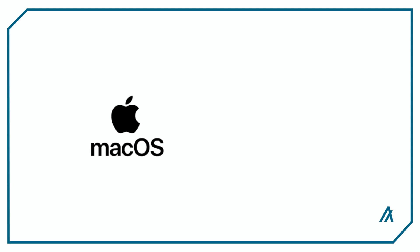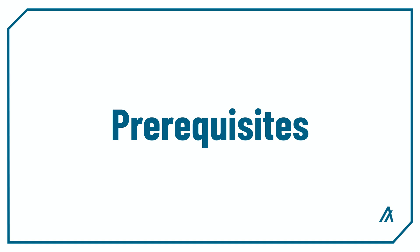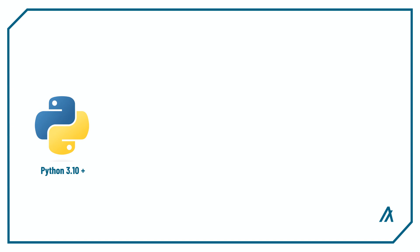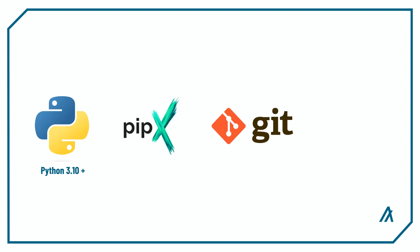A quick note before we get started: I'll be using macOS for this tutorial, but I'll leave a link on how to set up your development environment in Windows, along with all the links mentioned in the description. There are some prerequisites you need to install before following along: Python 3.10 or higher, pipx, git, and Docker. If you want a full walkthrough of installing these prerequisites, you can find the development environment setup videos in the description.